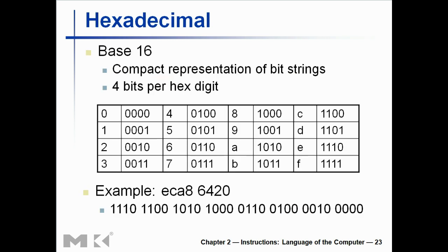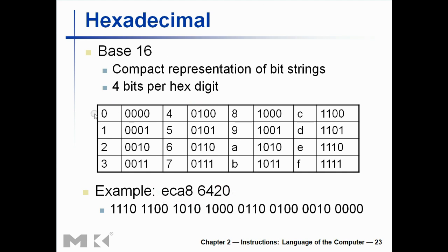Now a little discussion about hex. This is base 16 — you already did this in numerical representations. One thing to note: for 32-bit instructions, you have 8 hex digits as your limit, because 4 bits per hex digit times 8 equals 32. You cannot take more than that — that's the only thing to note here.